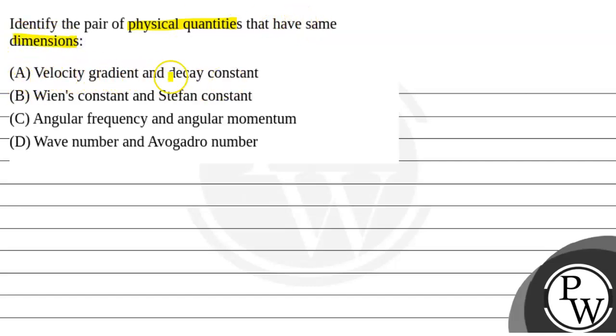Option A: velocity gradient and decay constant. Option B: Wien's constant and Stefan constant. Option C: angular frequency and angular momentum. Option D: wave number and Avogadro number.